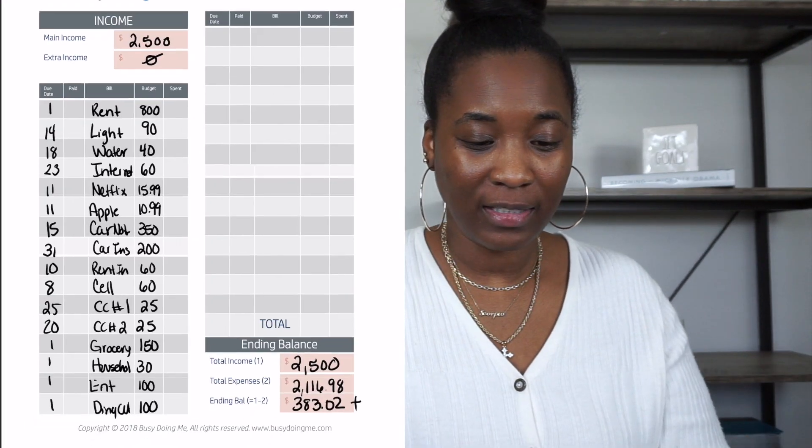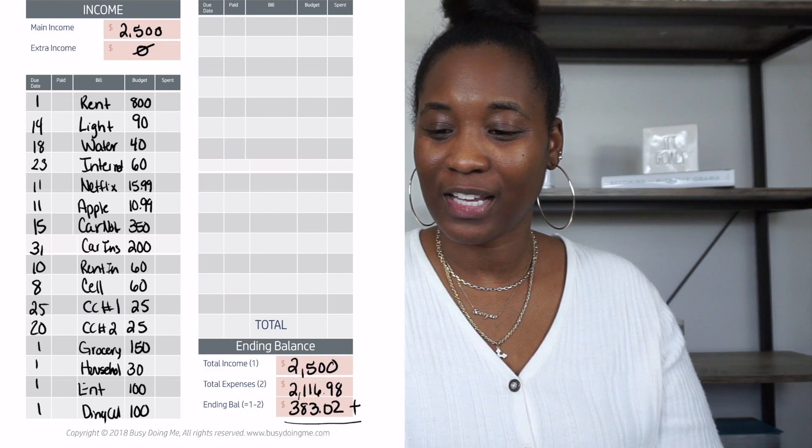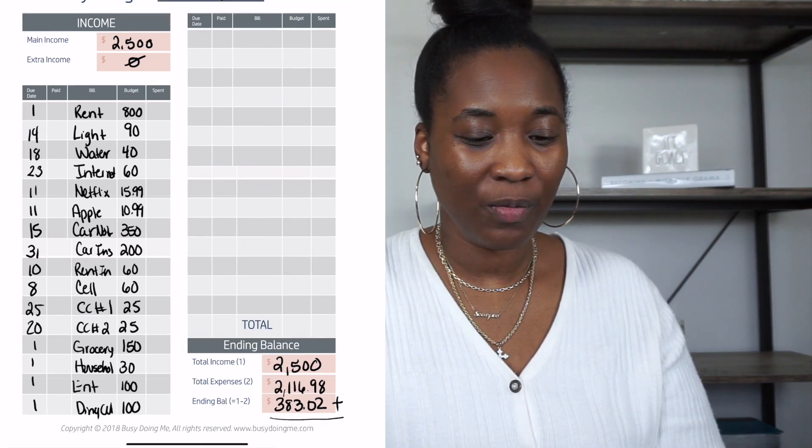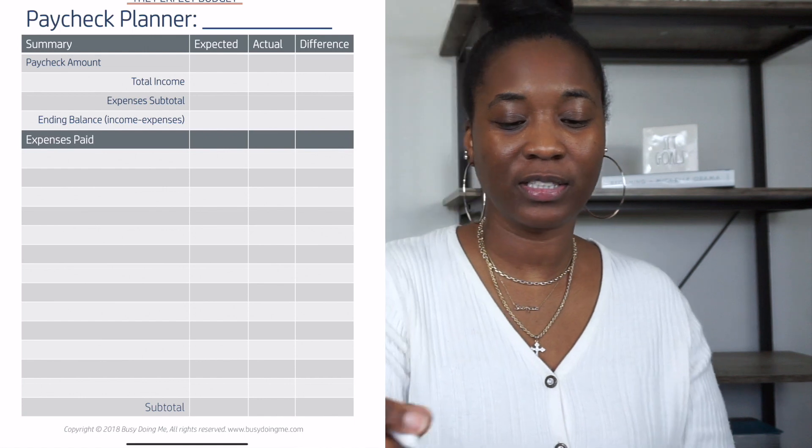If you come out in the negative, this is where you would reduce or eliminate discretionary items until you get back in the positive. If you've cut down to bare minimum expenses and you're still negative, you have two options: move to a cheaper place or lower your car payment, or find a second job or a higher-paying main job to cover your minimum expenses.